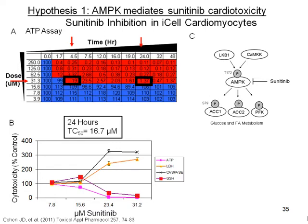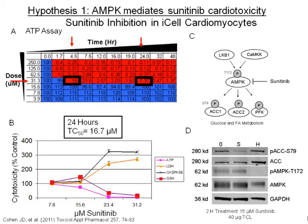Sunitinib is inhibiting downstream signaling of AMPK and not the upstream phosphorylation by either LKB1 or CAMK kinase. First, I wanted to confirm by Western blot that these cells are actually expressing AMPK and that we can modulate its downstream signaling in this model. You can see the expression of AMPK here, and as a positive control I also looked in HEK-293 cells. Sunitinib is only supposed to inhibit the downstream signaling of AMPK, and you can see clearly that it's inhibiting phosphorylation of ACC and is not affecting the phosphorylation of AMPK.